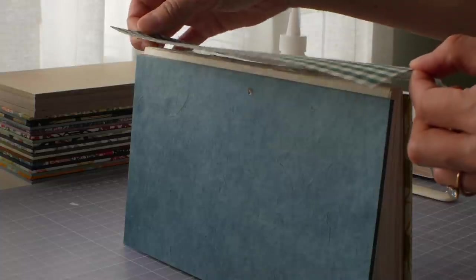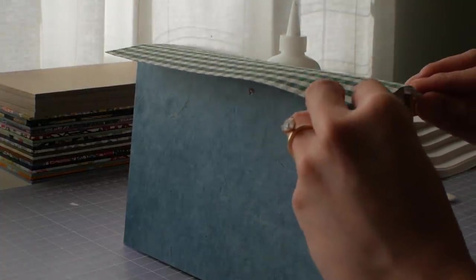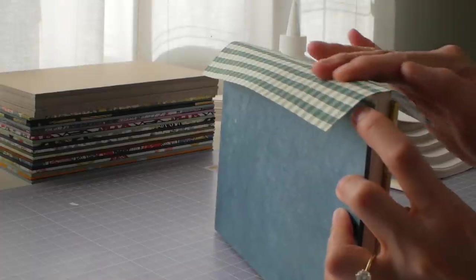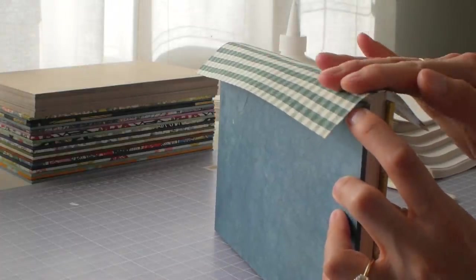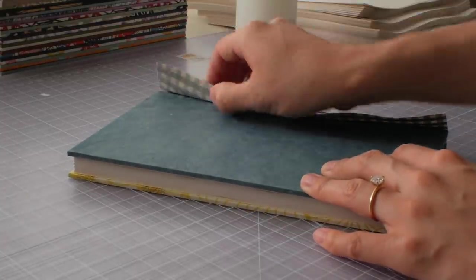Placing the book cloth on the spine was trickier than I thought so I worked too slow and the glue ended up drying so I had to peel a part off and try again.